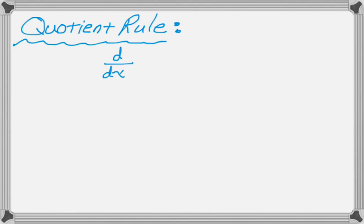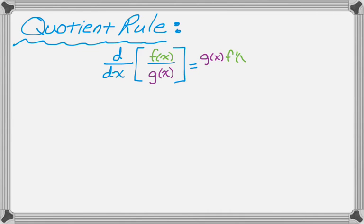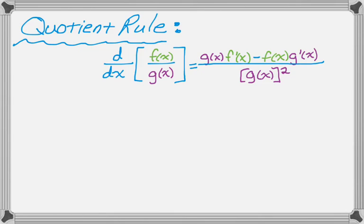The last rule you should remember is the quotient rule, which says the derivative of f(x) over g(x) is bottom times the derivative of the top, minus top times the derivative of the bottom, all over the bottom squared. Two things people screw up: they put a plus in the numerator instead of a minus — probably thinking of the product rule — and they just forget the denominator entirely. If you do write the denominator, make sure you square it.